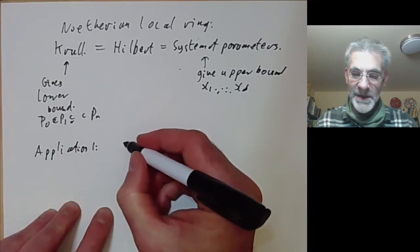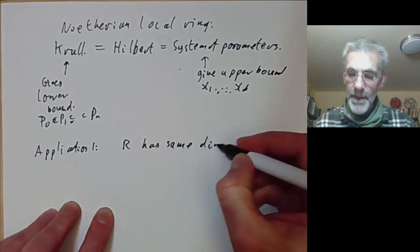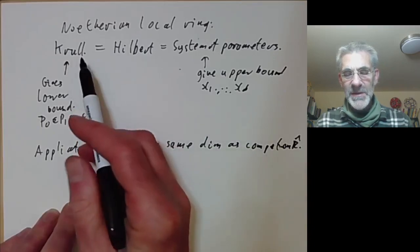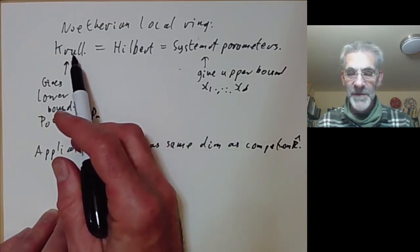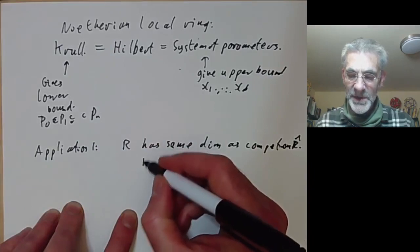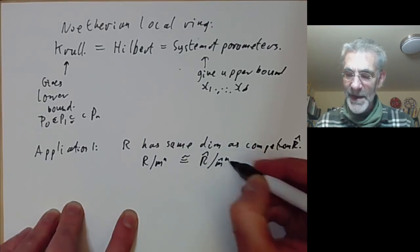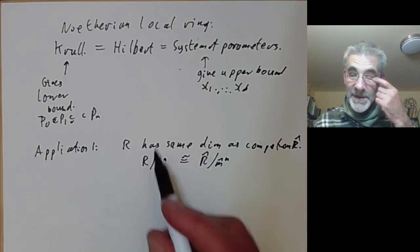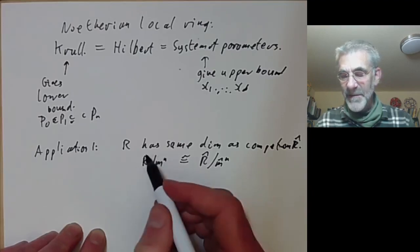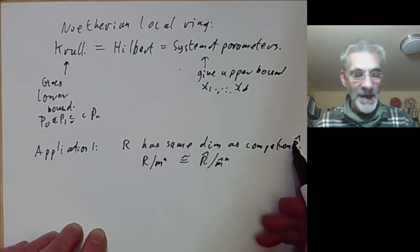The first application says that if you've got a Noetherian local ring R, then this has the same dimension as its completion R-hat. This is not trivial to prove using Krull's definition or the system of parameters definition, but it's completely trivial using Hilbert polynomials, because R over m^n is isomorphic to R-hat over m-hat^n. Since Hilbert's definition of dimension depends only on the size of these rings, R and R-hat have the same dimension.